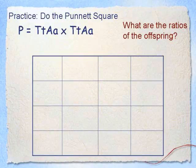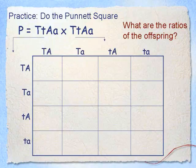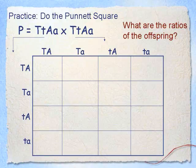Now we're going to practice another Punnett square. We're going to cross big T, little t, big A, little a with big T, little t, big A, little a. First step is to draw our 4x4 Punnett square with 16 boxes, then make the gametes. Since both parents have the same genotypes, the gametes will be the same on both axes: big T with big A, big T with little a, little t with big A, and little t with little a.